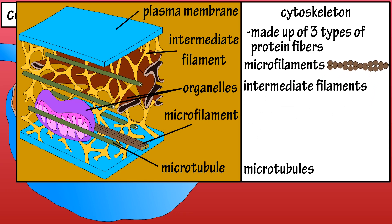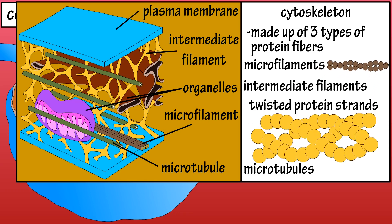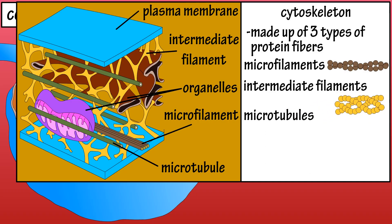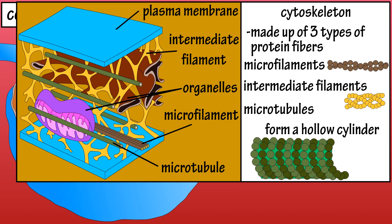Intermediate filaments are also twisted strands of proteins that provide much of the framework support in a cell, as they hold the cell together. Microtubules are made up of proteins that take on a spiral shape to form a hollow cylinder. They help maintain the cell shape and move some of the organelles within a cell.